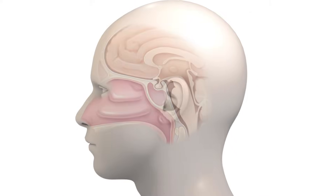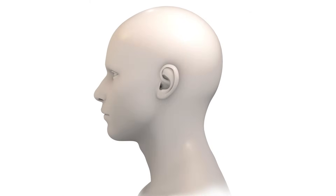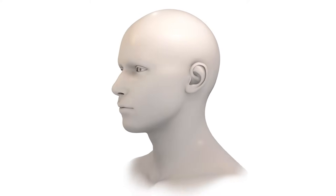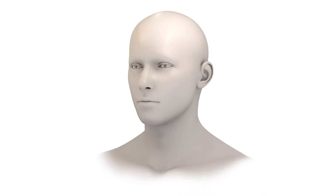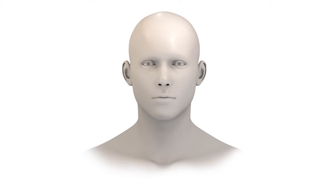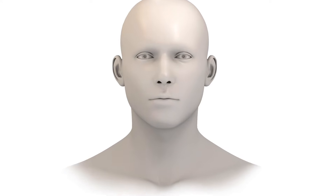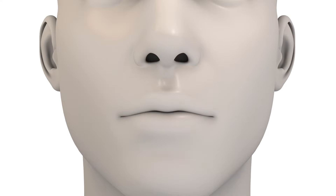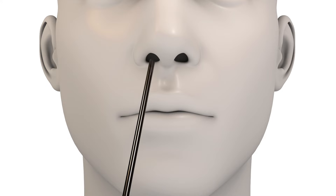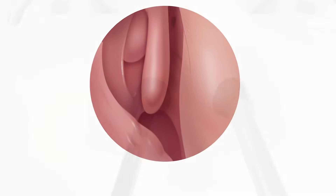We are now going to simulate an endoscopic endonasal approach to the pituitary gland and the base of the skull. We use the nostrils as natural corridors to access the skull base. We can introduce instruments through each nostril — on one side the endoscope, and on the other side dissecting instruments such as micro-scissors.